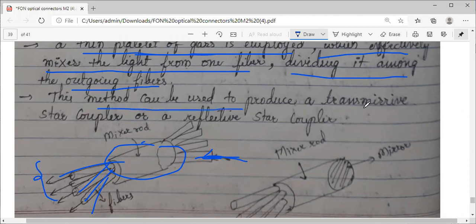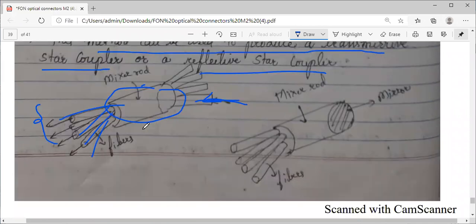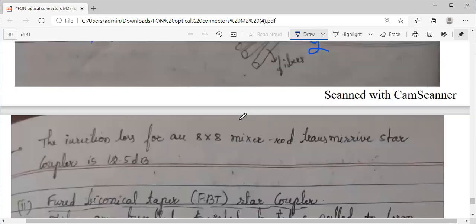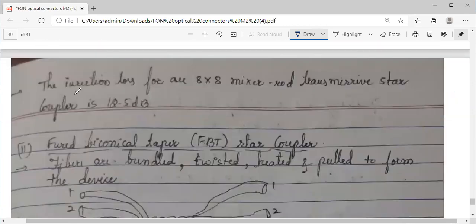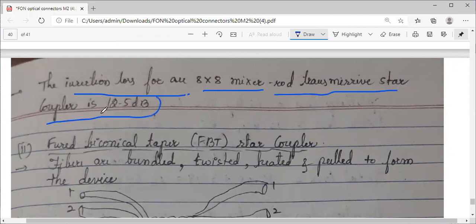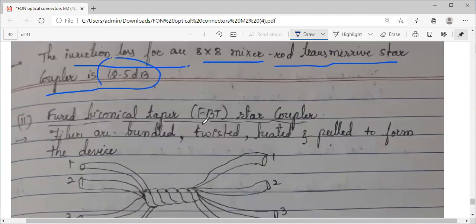This method can be used to produce a transmissive star coupler or reflective star coupler. This is transmissive coupler, and this is reflective star coupler because on the other side you are using a mirror to reflect. The insertion loss with an 8x8 mixer rod transmissive star coupler is 12.5 dB.